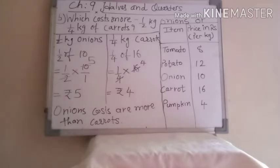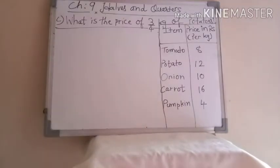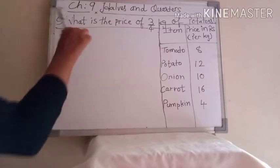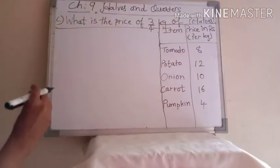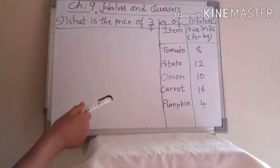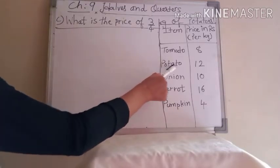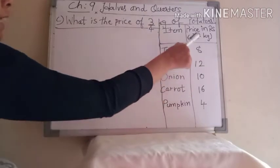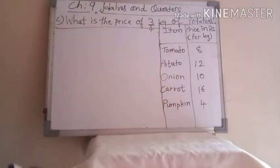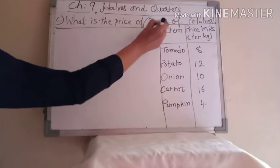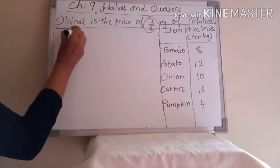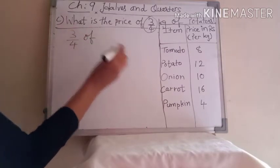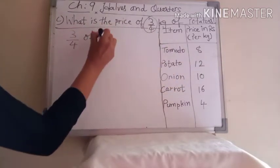Our third question is: what is the price of 3/4 kg of potatoes? We see in the table — potato price is 12 rupees for 1 kg. But we have to find the price of 3/4 kg. So here we write: 3/4 of 12, since potato price is 12.